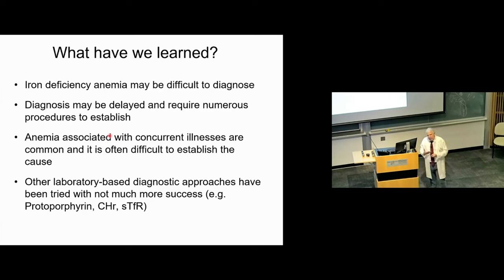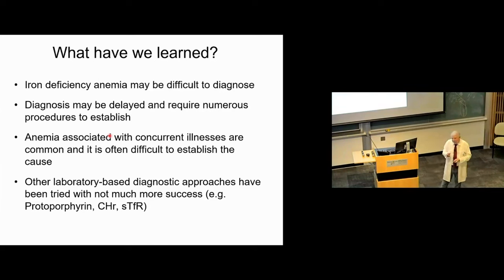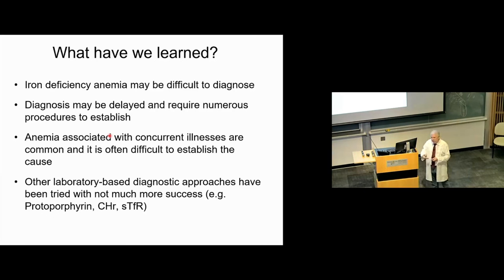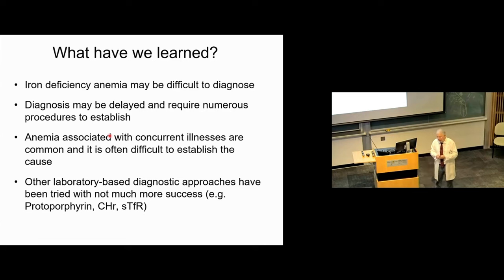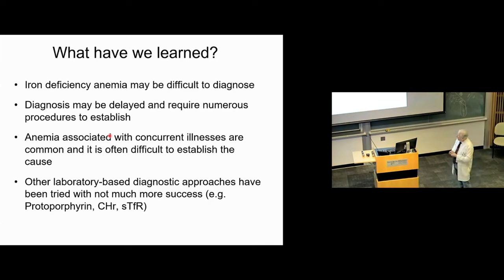Other laboratory-based diagnostic approaches include the soluble transferrin receptor, but it turns out to be not really better than ferritin. There is a way to measure reticulocyte hemoglobin content — the CHR — on some instruments, though it's not routinely reported. Measuring zinc protoporphyrin — heme without iron — has been done but is not very helpful. There are also some alternative approaches, but we're largely stuck with the established markers.